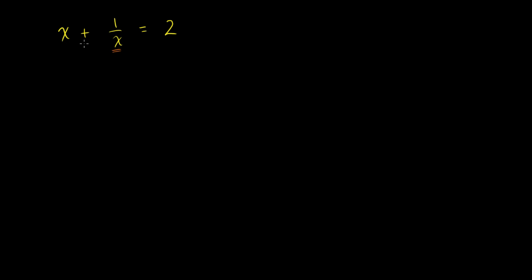So let's do that. We have to multiply every term by that — you can't just multiply one term. So multiply this term times x, this term times x, and then the 2 times x. We're just multiplying both sides of this equation by this denominator. We get x times x is x squared, plus x times 1 over x is just 1 — the x's cancel out. And then that's going to be equal to 2x.